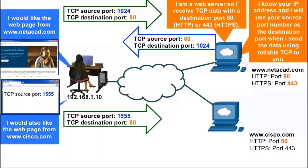If the client opens up a separate browser window, in this case entering the URL www.cisco.com, a different TCP source port number will be associated with this specific web browser window — in this case, TCP source port 1555. Although the HTTP request message will be sent to a different server, the same well-known TCP destination port number of 80 is used to indicate this is for the HTTP application.